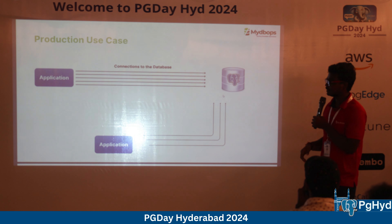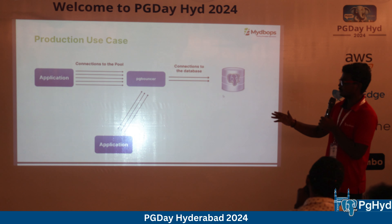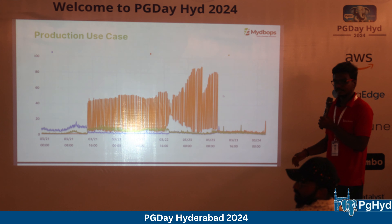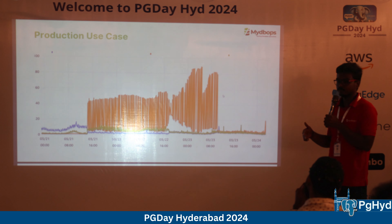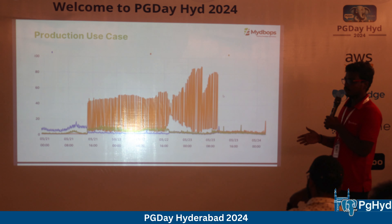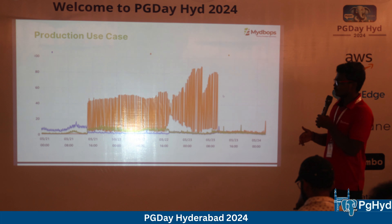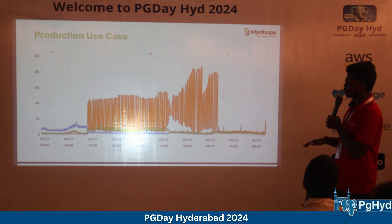Investigation revealed they had increased the number of applications, each with its own connection pooler. This caused connections in the database to increase proportionally — reaching around 4,800 to 9,000 connections against a max_connections limit of 5,000. To prevent reaching the limit, the internal DBA team set up a cron job to kill idle connections. However, the application-level connection pooler was recreating those connections immediately.